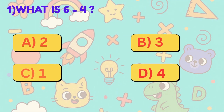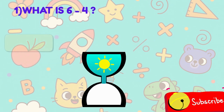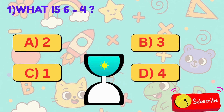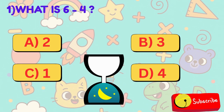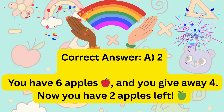1. What is 6 minus 4? Is it A, 2, B, 3, C, 1, or D, 4? Correct answer is A, 2.